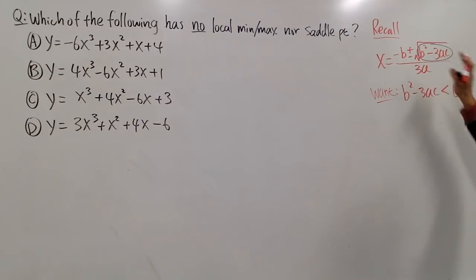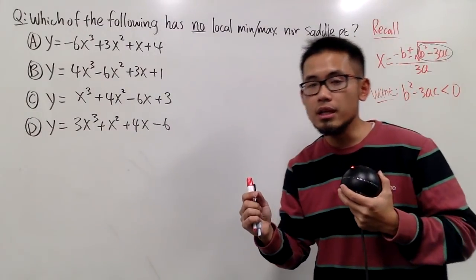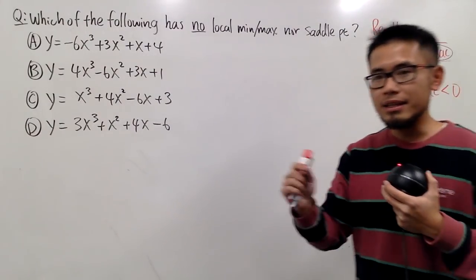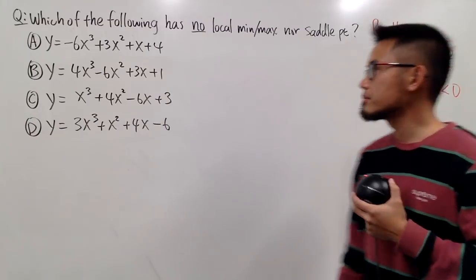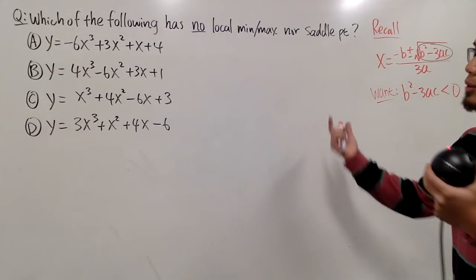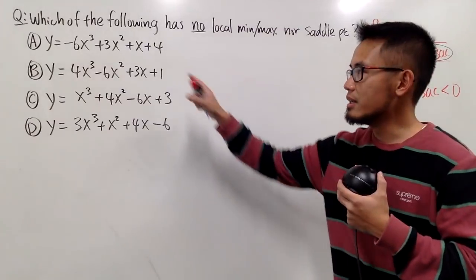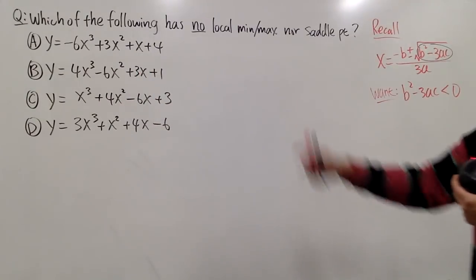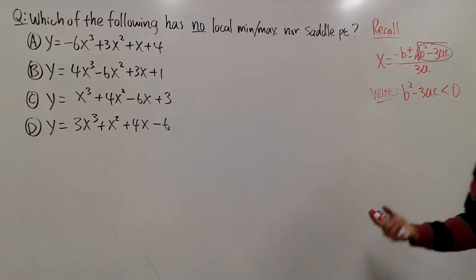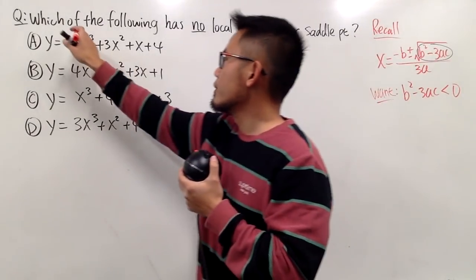Because if we don't have any vertex, that means the function is always going to go up. It doesn't become flat at all. So now we just have to plug in the coefficients according to each equation into this expression and work it out.